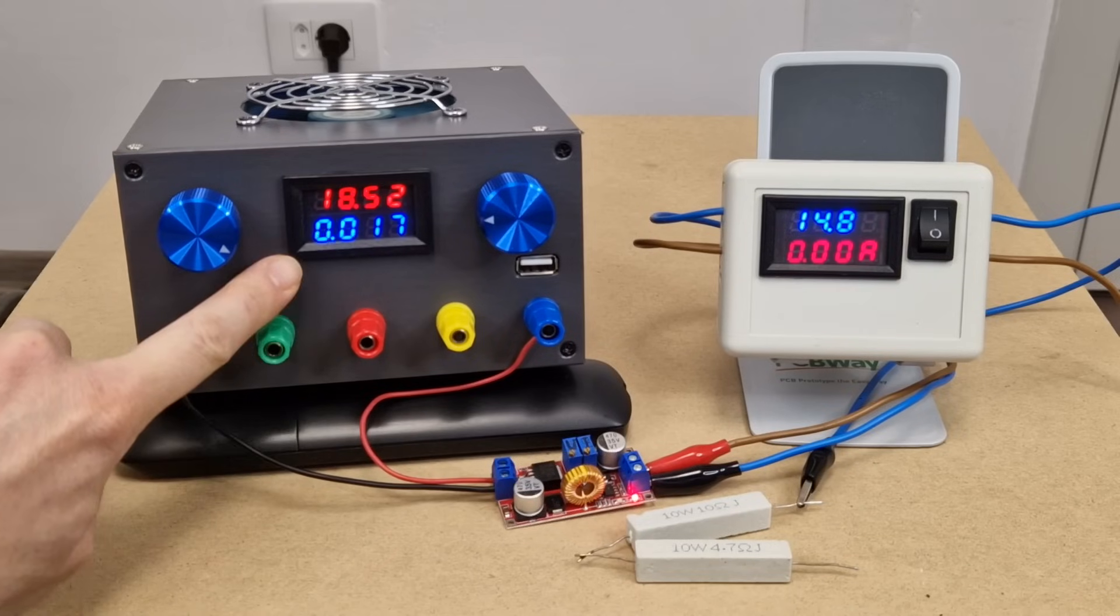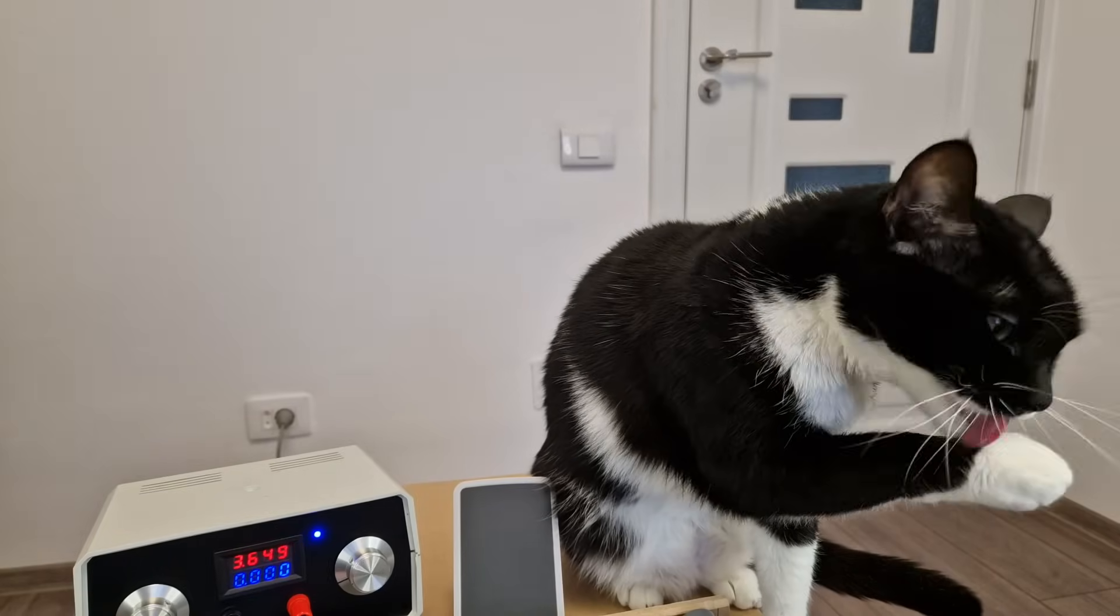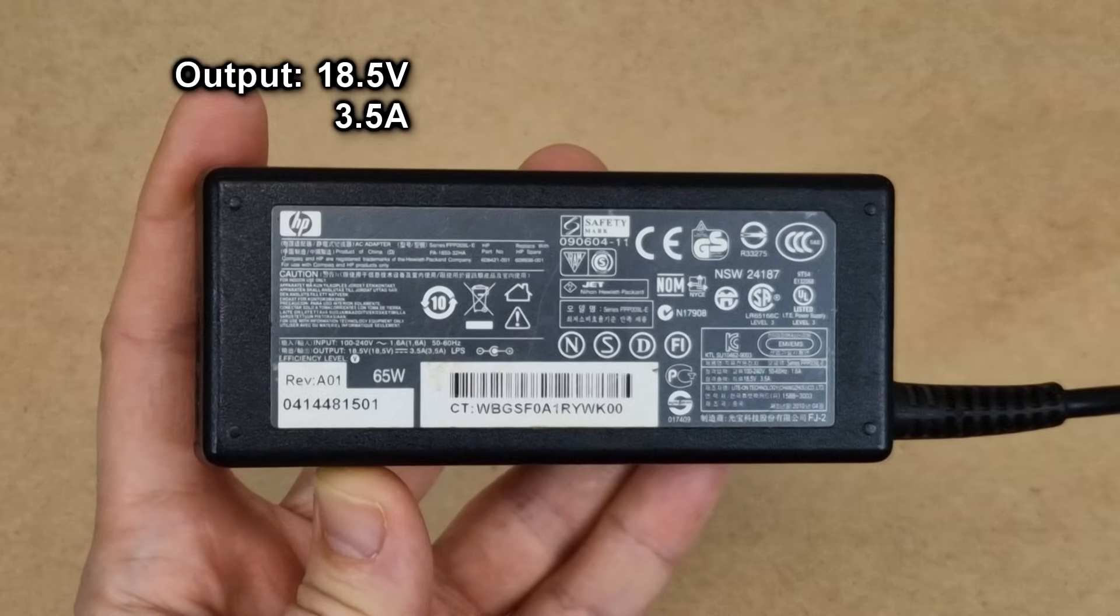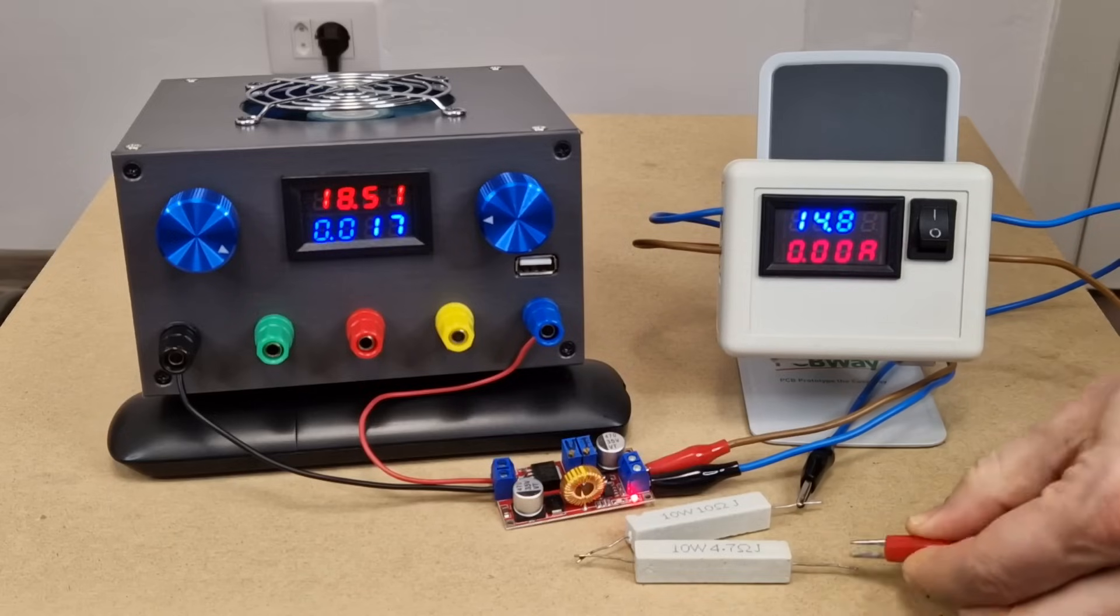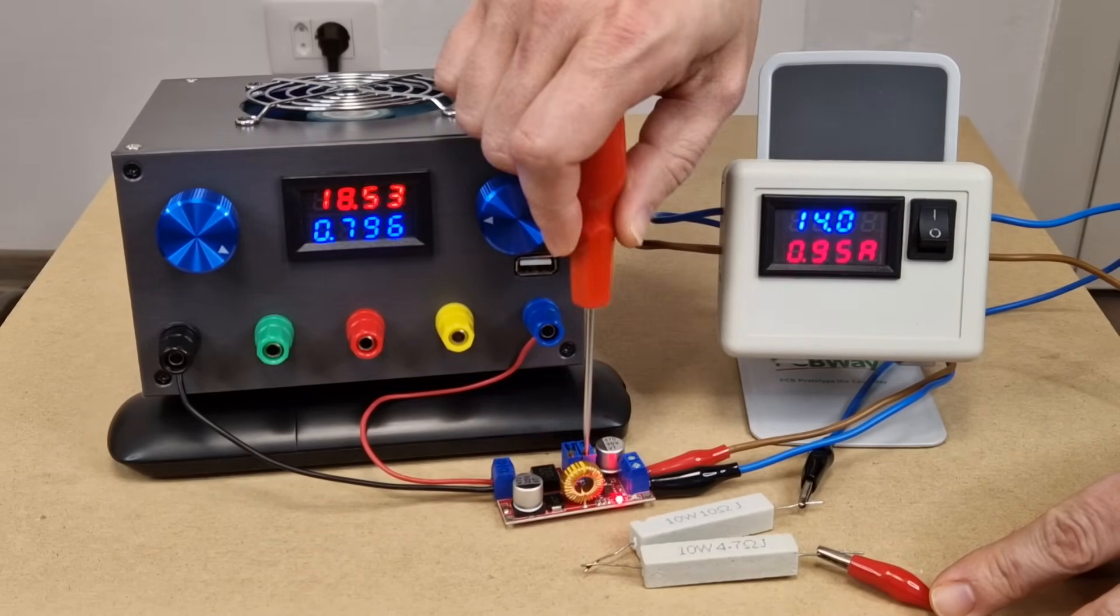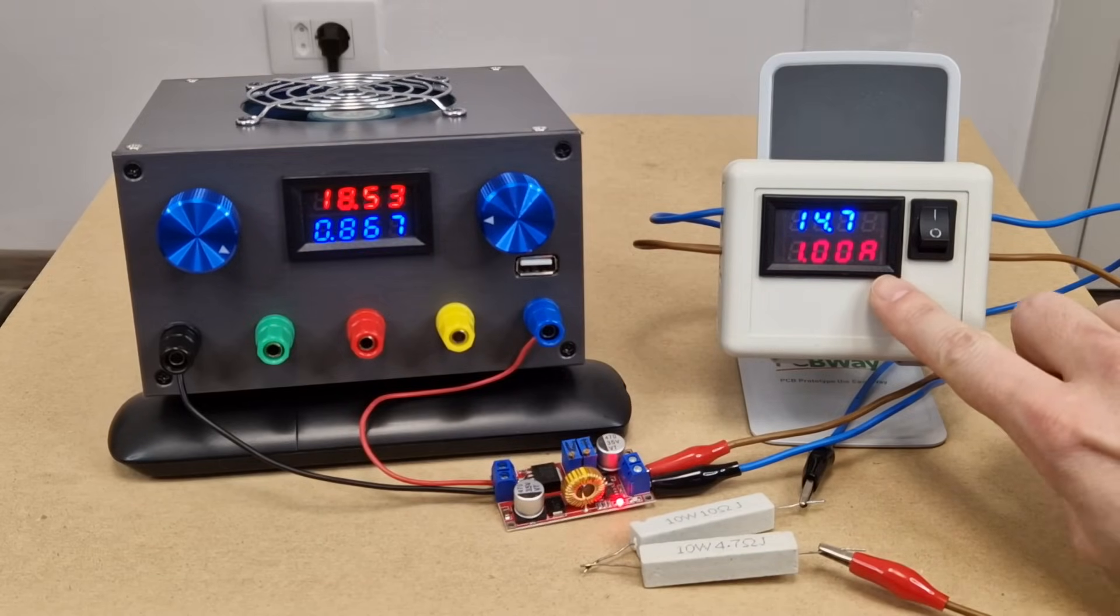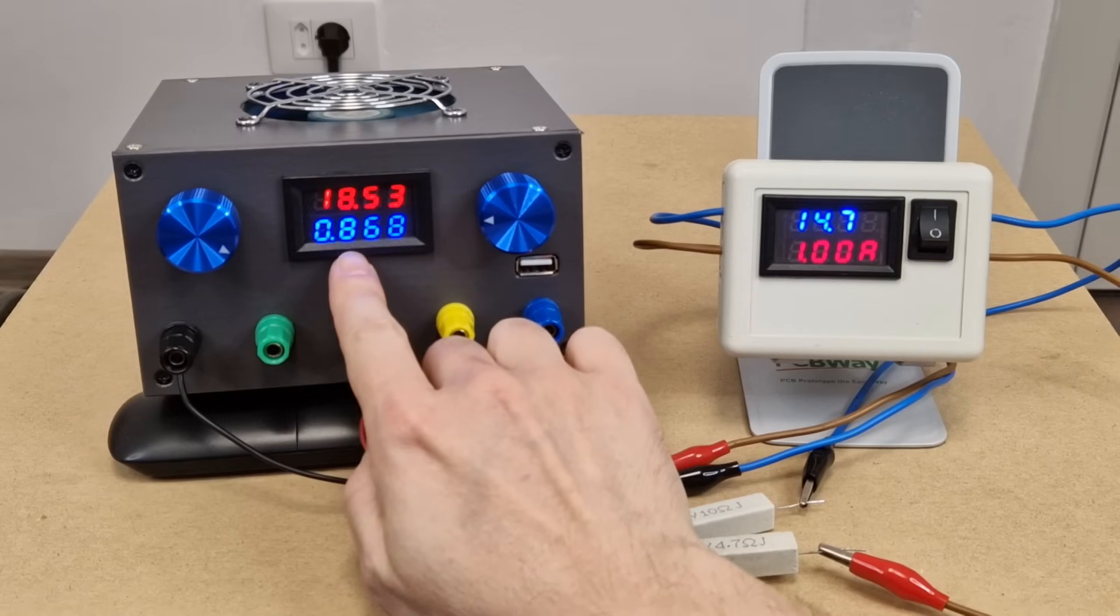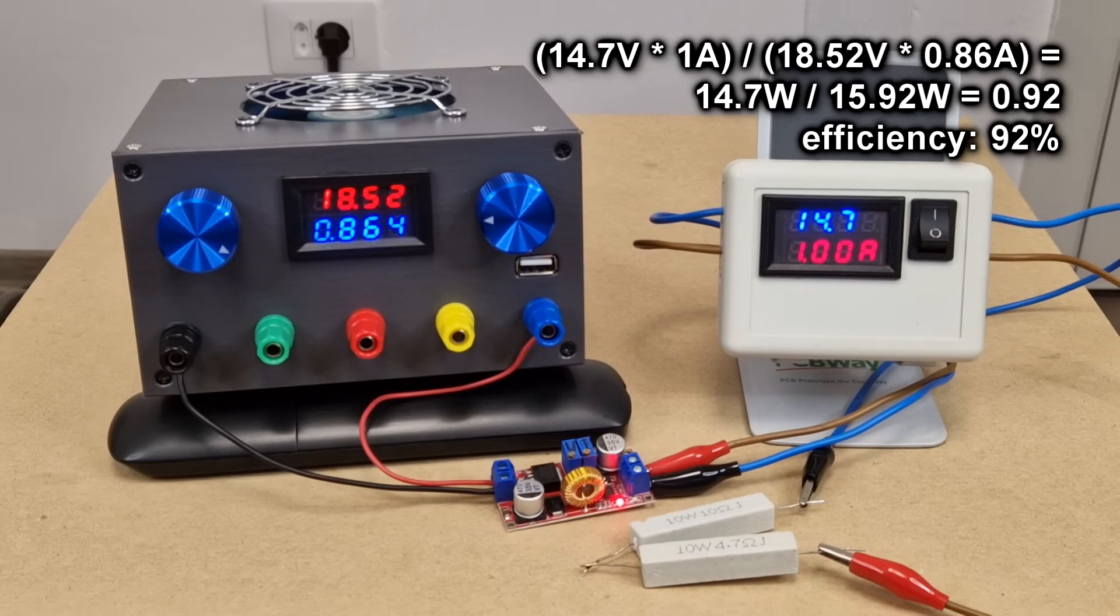My variable power supply represents the UPS charger which is salvaged from an old laptop. Remember that the total current consumption from the charger cannot exceed 3.5A. This combination of ceramic resistors represents the battery. I will adjust the charging current to 1A. With an output of 14.7V and 1A, the converter draws 0.86A from the charger. At this point we can also calculate the efficiency of this converter, which is 92%. That's pretty good.